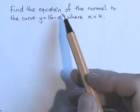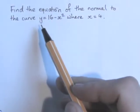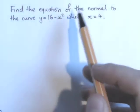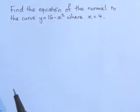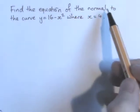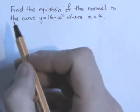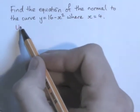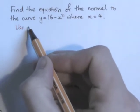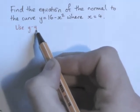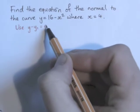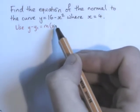This question asks us to find the equation of the normal to the curve y equals 16 minus x squared, where x equals 4. So the normal is a straight line, so we should be thinking about using y minus y₁ equals m times x minus x₁.